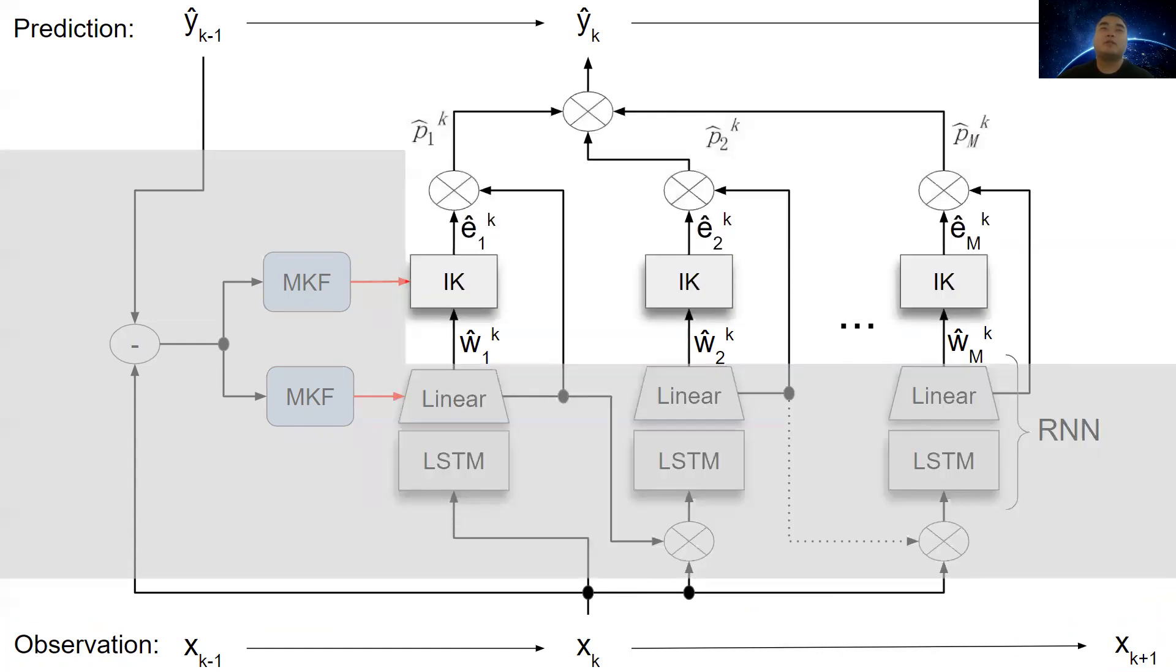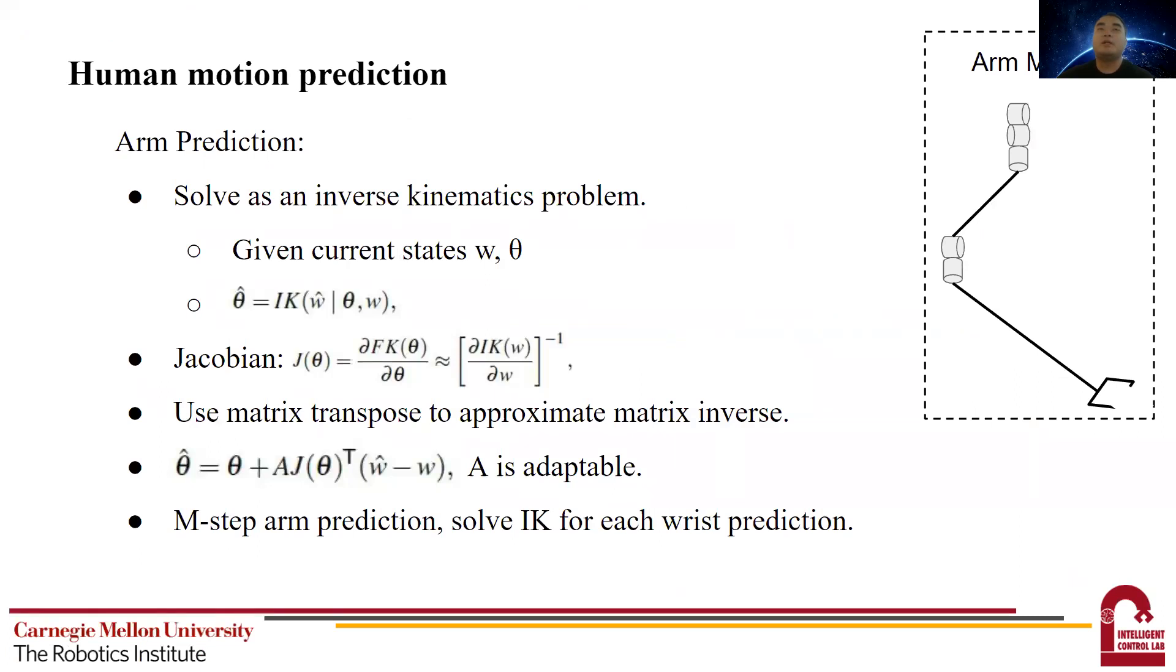Then we're going to move on to the arm prediction. For arm prediction, as shown in the right figure, we decompose a human arm into a 5 degree of freedom manipulator. The shoulder joint is decomposed to three revolute joints, and the elbow is decomposed to two revolute joints, and the wrist is the end effector.